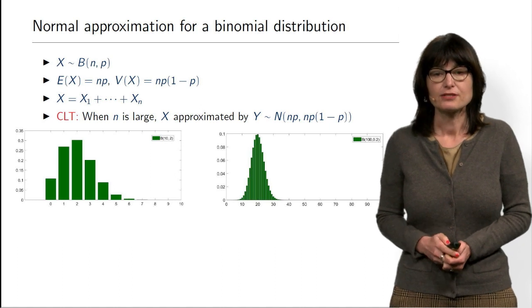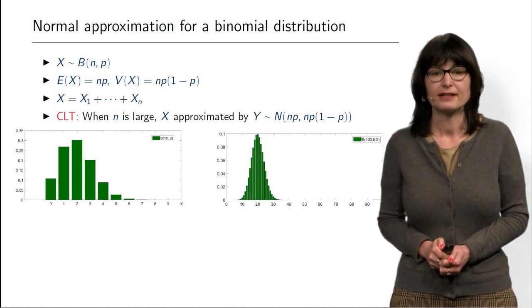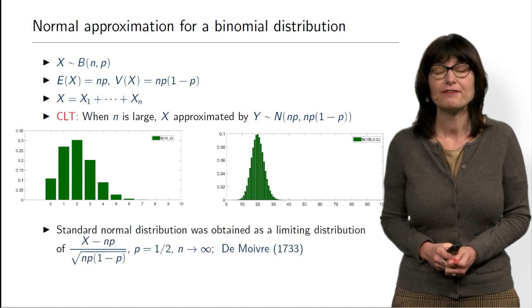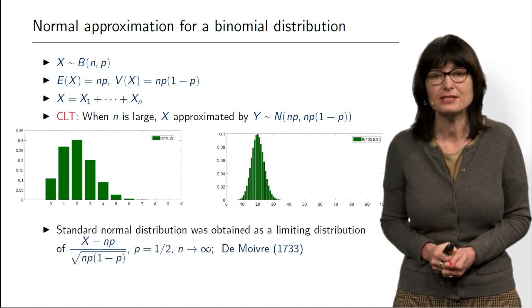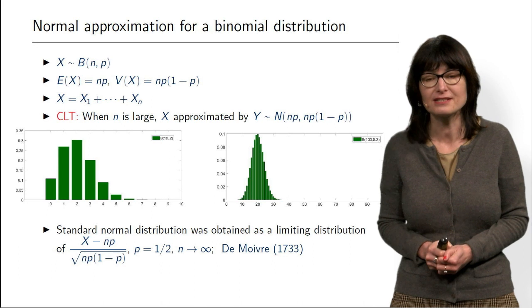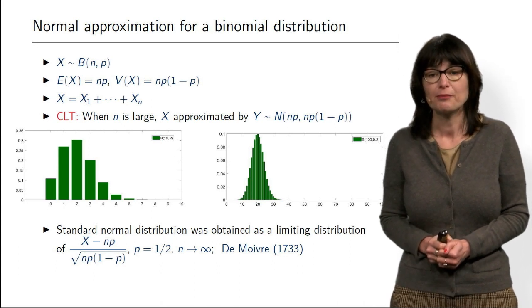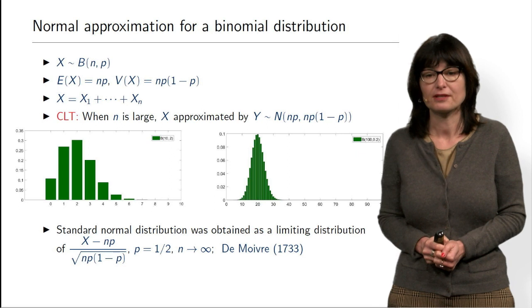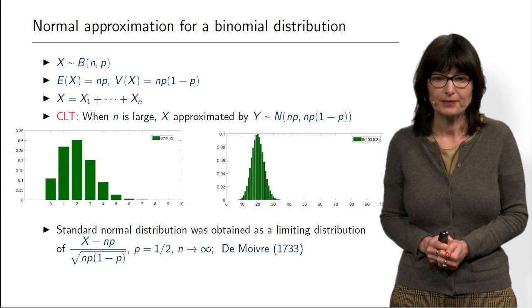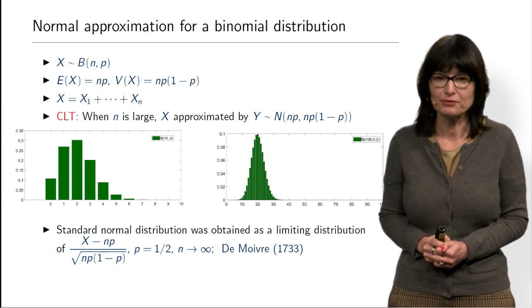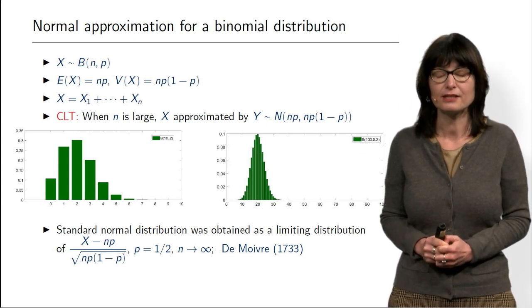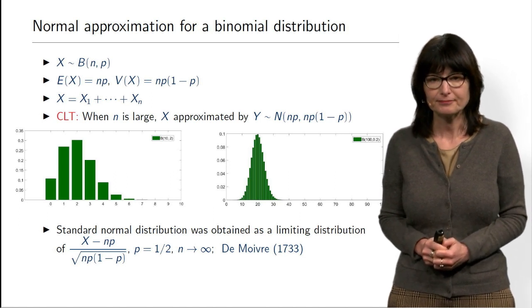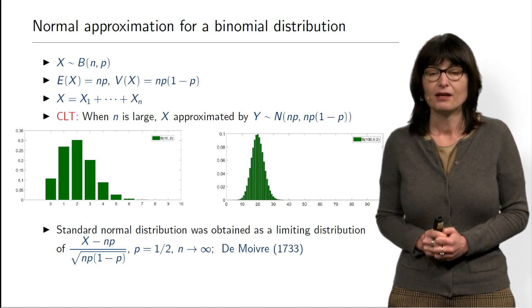Indeed, experiments confirm this, and we have known this result for a very long time. This was actually the very first instance of the central limit theorem, proven almost 300 years ago by de Moivre, who proved this limiting result for binomial distribution when the parameter P equals one-half.